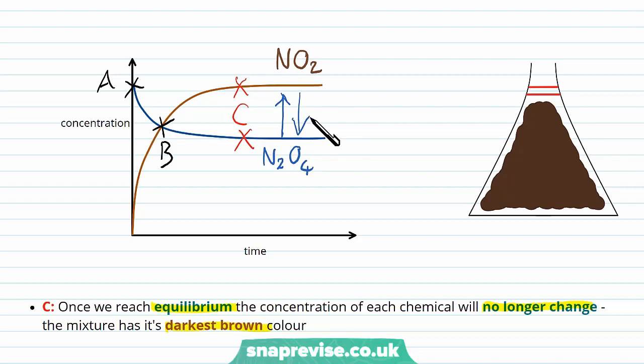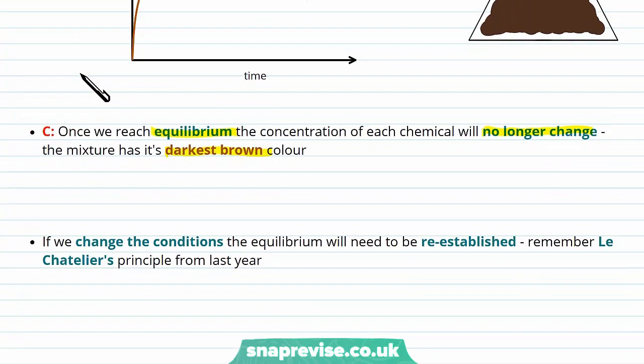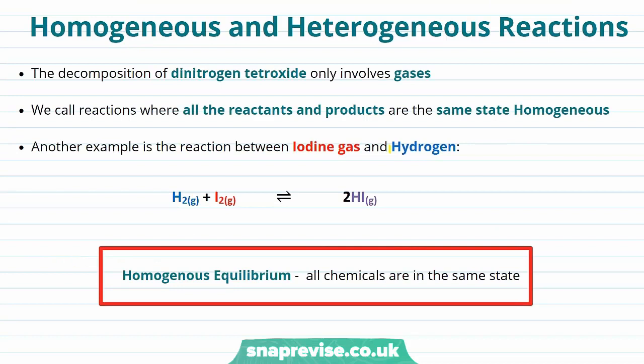If we were to change any of the conditions — for example the pressure — then the equilibrium would need to be re-established. Remember Le Chatelier's principle? If we increase the pressure, it would push the reaction towards the side with the least molecules of gas. In the decomposition of dinitrogen tetroxide, only gases were involved. We call reactions where all the reactants and products are in the same state — all gases or all liquids — a homogeneous reaction.